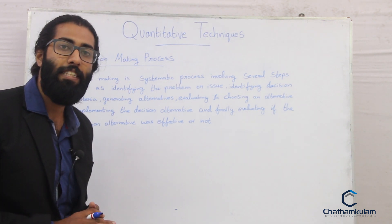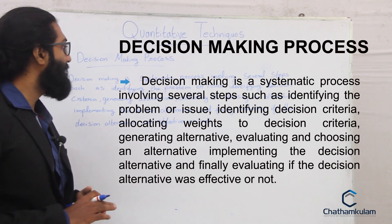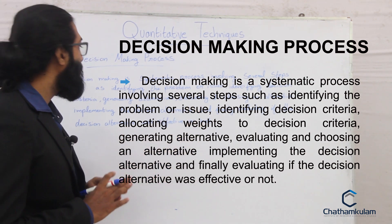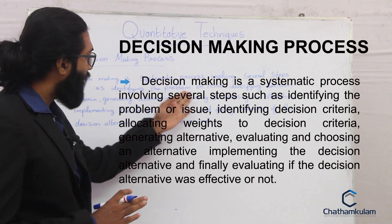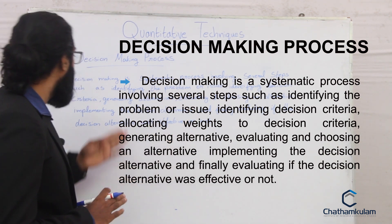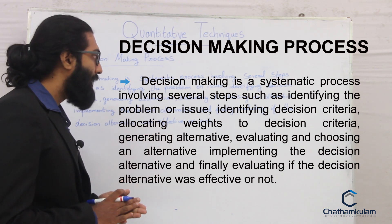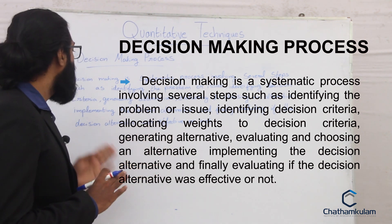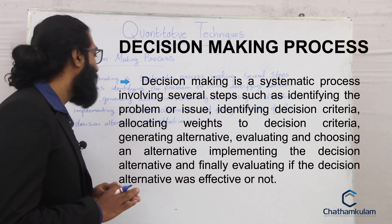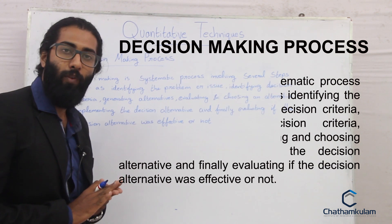Next we will see the decision making process. It is a systematic process involving several steps: identifying the problem or issue, identifying decision criteria, generating alternatives, evaluating and choosing an alternative, implementing the decision alternative, and finally evaluating if the decision alternative was effective or not.